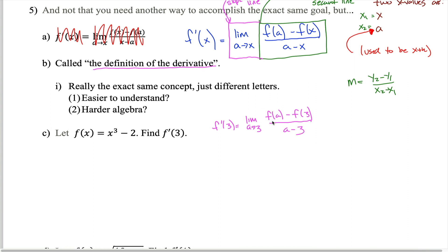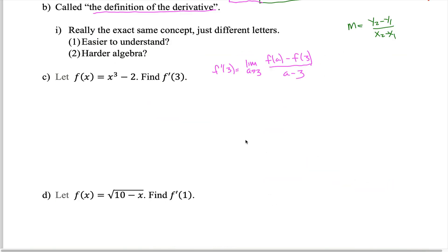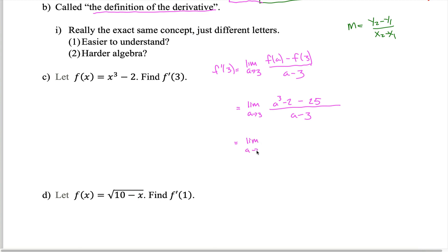f prime of 3 equals the limit as a approaches 3 of f of a minus f of 3, divided by a minus 3. f of a is just a cubed minus 2. f of 3 is 3 cubed minus 2, which is 27 minus 2, giving 25. So we get the limit as a approaches 3 of a cubed minus 27 divided by a minus 3 — combining the minus 2 and minus 25 into minus 27.